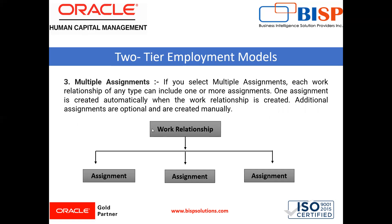The last two-tier variation is multiple assignment. If you select multiple assignment, each work relationship of any type can include one or more assignments. One assignment is created automatically when the work relationship is created. Additional assignments are optional and are created manually. In this employment model, you will not be able to capture contract-related information. By the diagram, you can see there is one work relationship and multiple assignments.